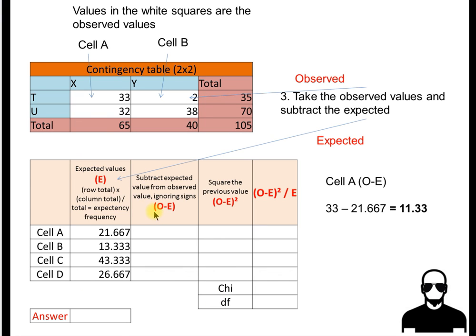What we have to do is we have to take the expected value and subtract it from the observed value. The observed value for cell A is 33. The expected value for cell A is 21.667. So we say 33 minus 21.667 equals 11.333. So that goes in this column here. Calculate for the rest and then check your answers in a second. Pause it now.